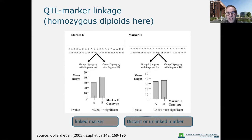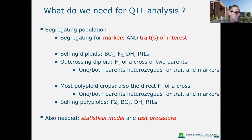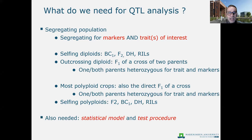So what do we need for a QTL analysis? We need a segregating population that segregates both for the markers and also for the phenotypic traits. In selfing diploids this could be a backcross population, an F2, double haploids, or recombinant inbred lines. For outcrossing diploids we often use the direct F1 of a cross between two heterozygous parents, and that's also what we see in most polyploid crops. It would also be possible to have an F2 in selfing polyploids.